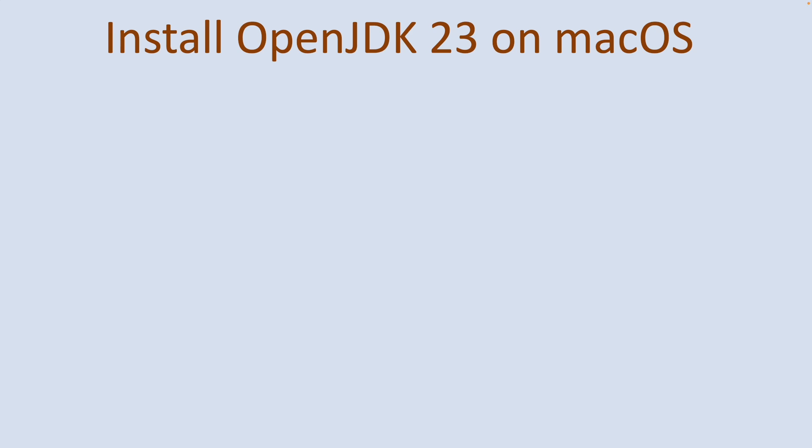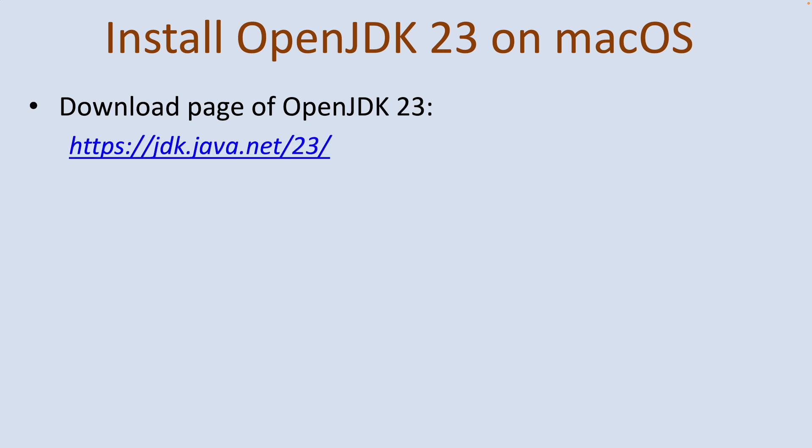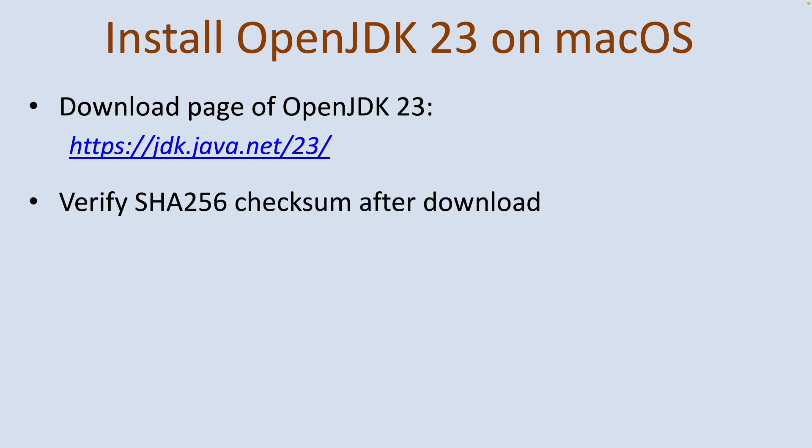To install OpenJDK 23 on macOS, it is strongly recommended to download the binary distribution of OpenJDK from its official download page at this URL. It is also strongly recommended to verify the integrity of the downloaded archive file by checking its SHA256 checksum value after download.